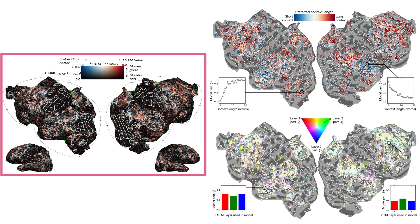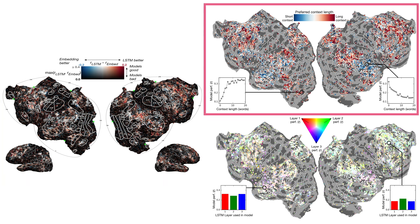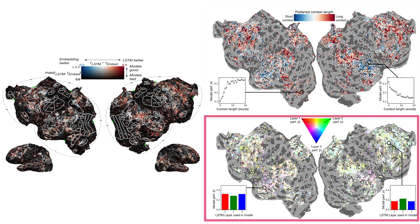By using an LSTM language model, we incorporated context to build a better model for language processing in the brain. By conditioning on the context length, our model is able to capture different timescale preferences across the brain. And by conditioning on the LSTM layers, we learned about the information each layer could be capturing based on what we know about different language areas.